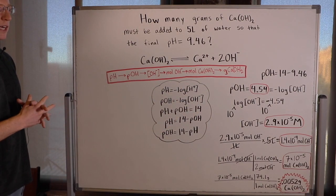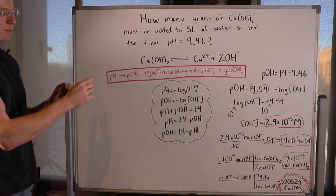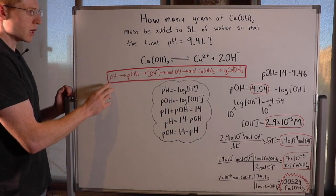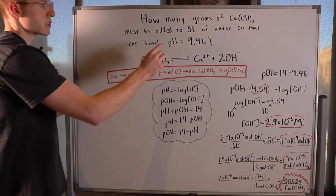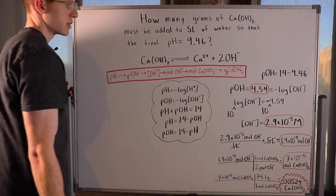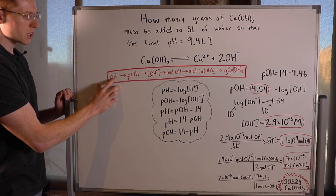So in this problem, we actually have to work backwards. I boxed in red here the general scheme that we will follow in this problem. All we know right now is the volume of the solution, the pH, and that we had calcium hydroxide.